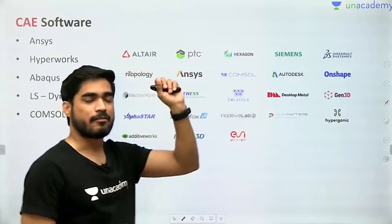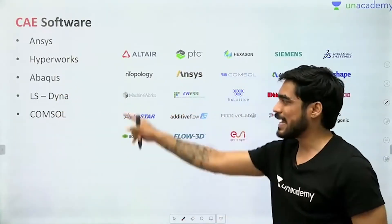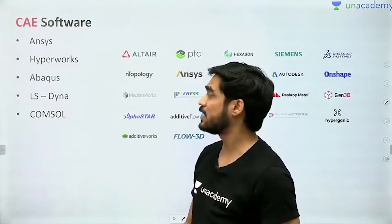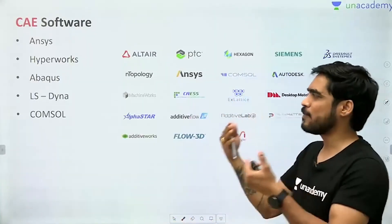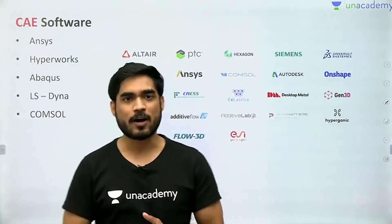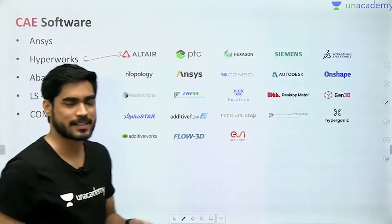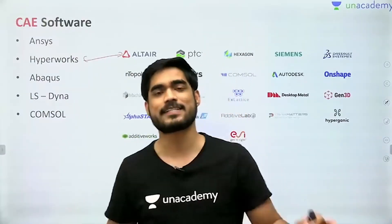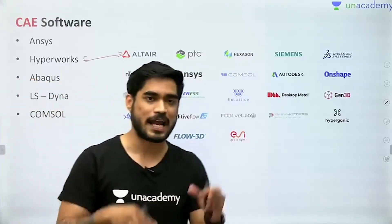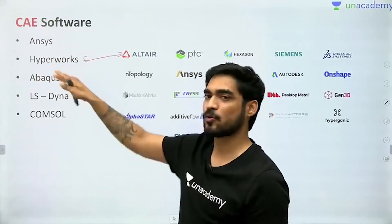These are some major CAE software: Ensis, Hyperworks, Abaqus, LS-DYNA, and COMSOL. LS-DYNA is used for dynamic analysis. Abaqus is used for non-linear analysis. Hyperworks and Ensis are all-rounders — they can perform many types of analysis. I used to work in Hyperworks — Altair's Hyperworks — at Mahindra and Mahindra. I will teach you Hyperworks: how to make a finite element model and how to perform analysis using this software.